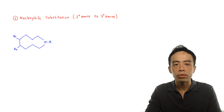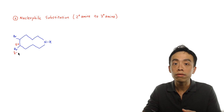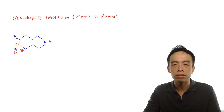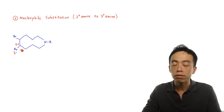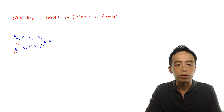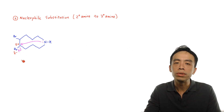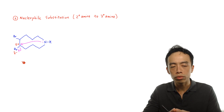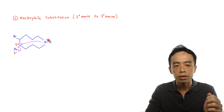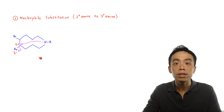Let me write the partial charges on the haloalkane. The carbon attached to the bromine group has a partial positive charge (δ+) and bromine has a partial negative charge (δ−), because halogen is more electronegative than carbon. Nitrogen in amines has a lone pair, so it functions as a nucleophile. I draw the arrow from the lone pair of nitrogen attacking this carbon, and then the C-Br bond breaks, kicking out Br⁻ as a byproduct. The product has nitrogen directly bonded to this carbon and the C-Br bond broken.